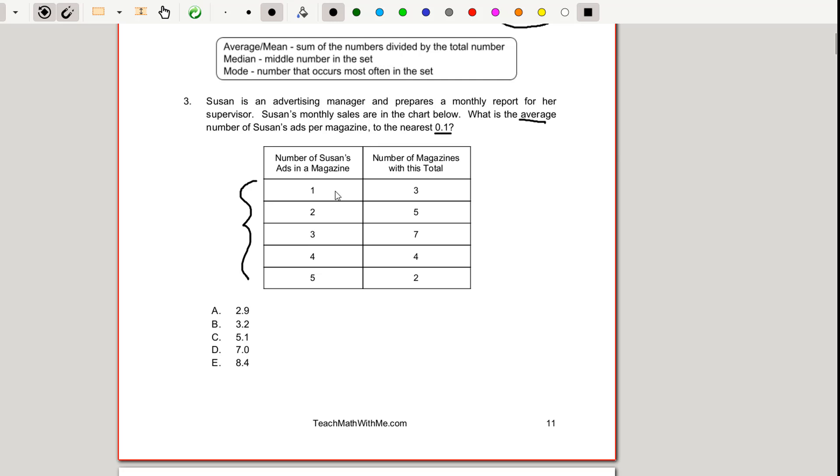If we're given that there's one ad in three magazines that gives us a total of one times three, three ads for this first row. Two ads are in five magazines, so two times five is going to give us ten. Three ads in seven, so three times seven gives us 21. Four ads in four magazines gives us four times four is 16. Five ads in two magazines is ten. We need to add up these five numbers and we are going to get 60.